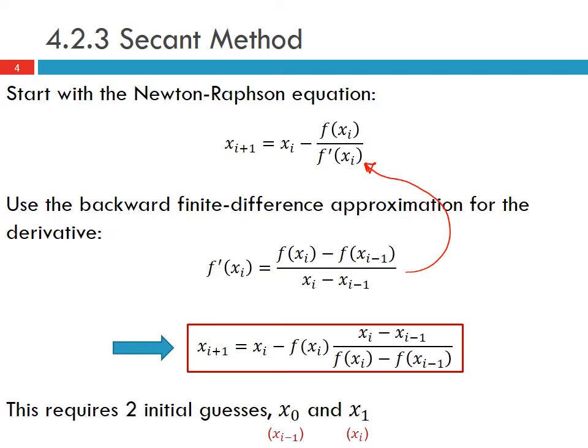This requires two initial guesses, x_0 and x_1, which become x_{i-1} and x_i in our expression. So x_0 and x_1 are used to find x_2, then x_1 and x_2 are used to find x_3, etc.